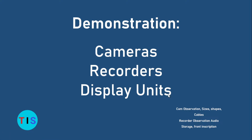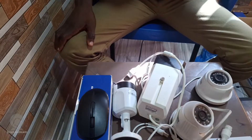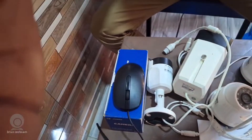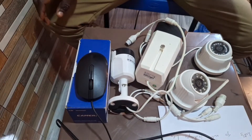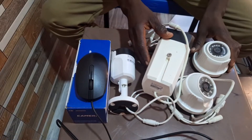It's time to demonstrate to you what the cameras are and what they are recorded on, so I'm coming to my table or desk where I have cameras right here to show you. Here is my table of cameras. As I mentioned, a CCTV system comes with cameras, recorders, and display units. I have on the table right here various cameras.